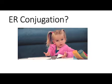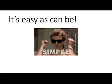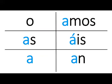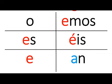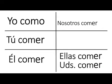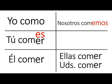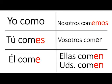ER conjugation, it's easy as can be. All you gotta do is switch the A out for an E. Like nosotros come, tú comes, él come, yo como, ellos comen, ustedes comen. I could do this all day.